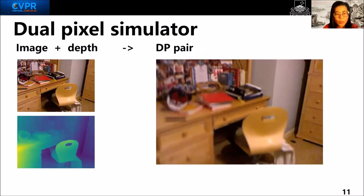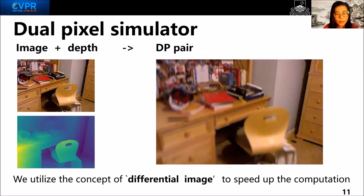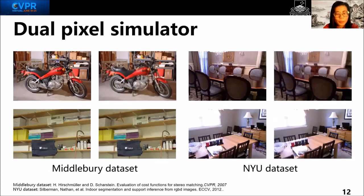Therefore, we propose a DP simulator. Based on existing RGB-D datasets, we can generate DP pairs as many as required. Moreover, we utilize the concept of differential rendering to speed up the computation. Examples are given on the Middlebury dataset and the NYU dataset.